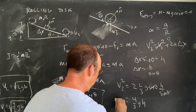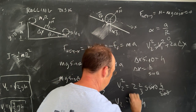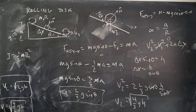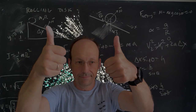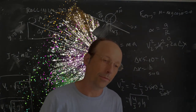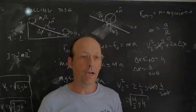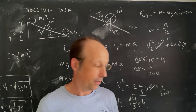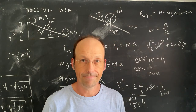Taking the square root of both sides gives v2 equals the square root of four-thirds g h — the same result as before! You can do the problem either way, and it's just kind of fun to do it both ways. The end.